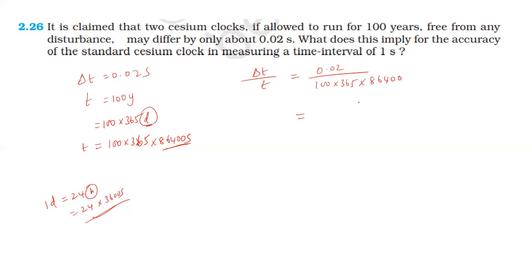The calculated value is approximately 6.34198 into 10 power 9 seconds per 100 years. The error per second is 0.02 divided by 6.34198 into 10 power 9, giving approximately 6.34 into 10 power minus 12 seconds per second.